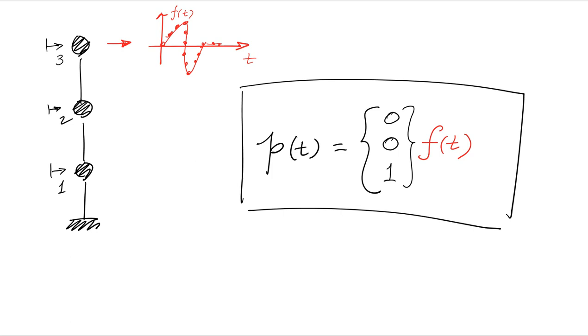We have 0 in degree of freedom 1, 0 in degree of freedom 2, and 1 in degree of freedom 3, multiplied by the time history f of t.